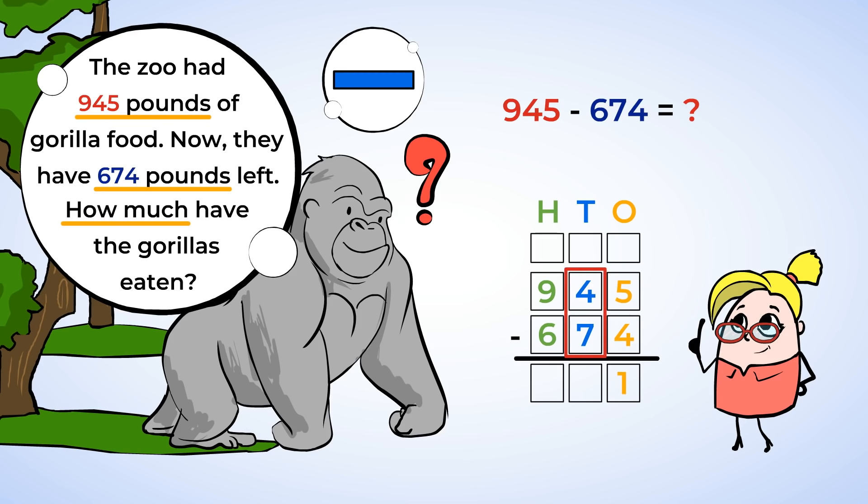Next, 4 minus 7 tens. Aha! We don't have enough tens to subtract again. We're gonna need to regroup. Remember, 100 is the same as 10 tens. The number 945 has 9 hundreds, so taking 1 of those hundreds to regroup leaves us with just 8 hundreds. We can exchange this 100 for tens. And now we have 14 tens.